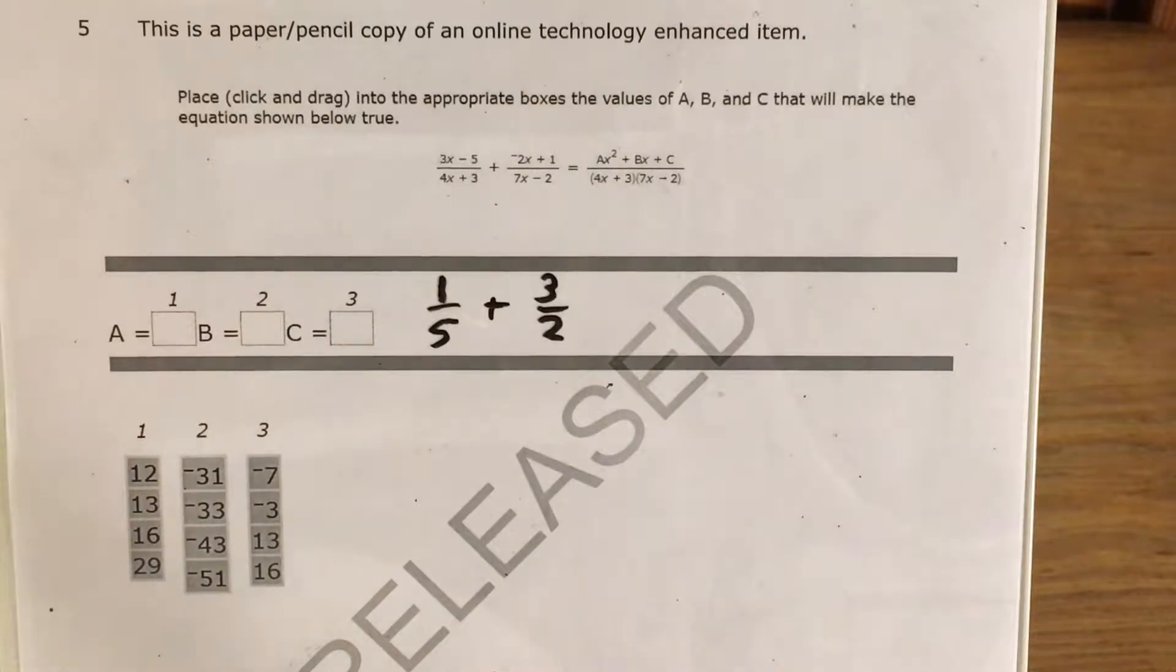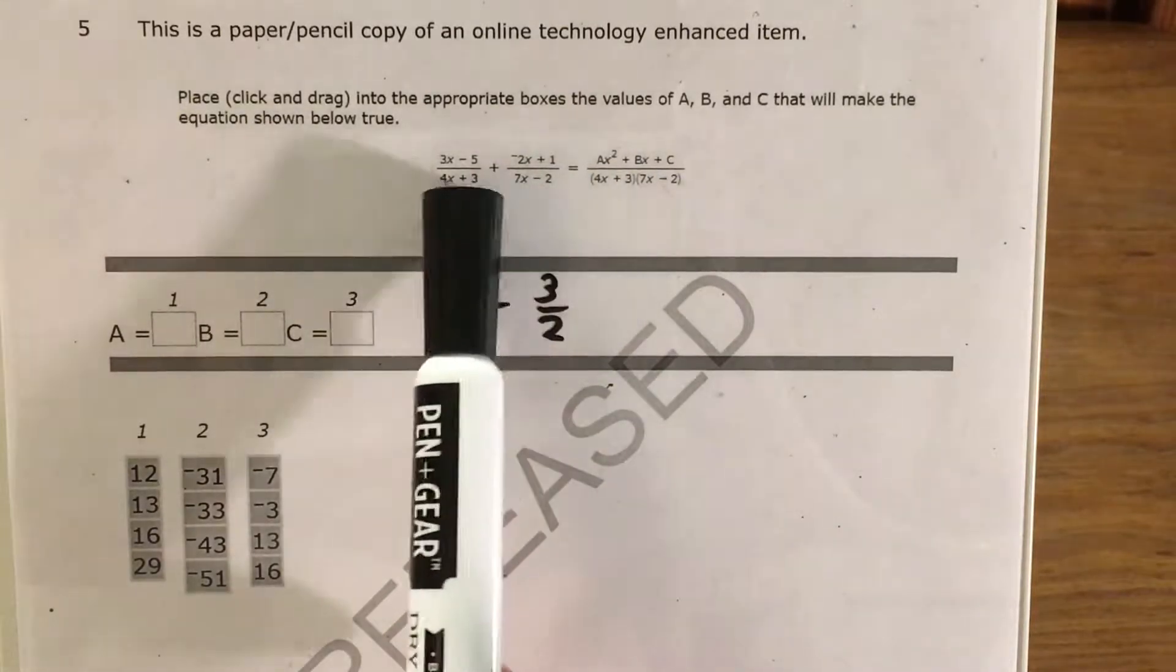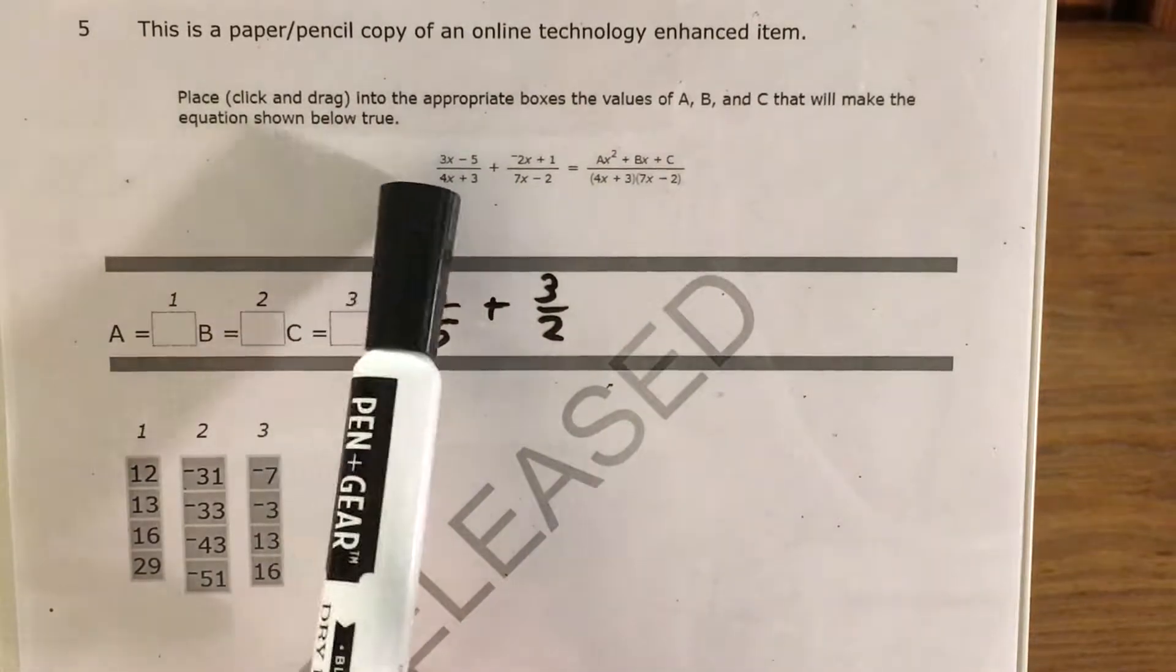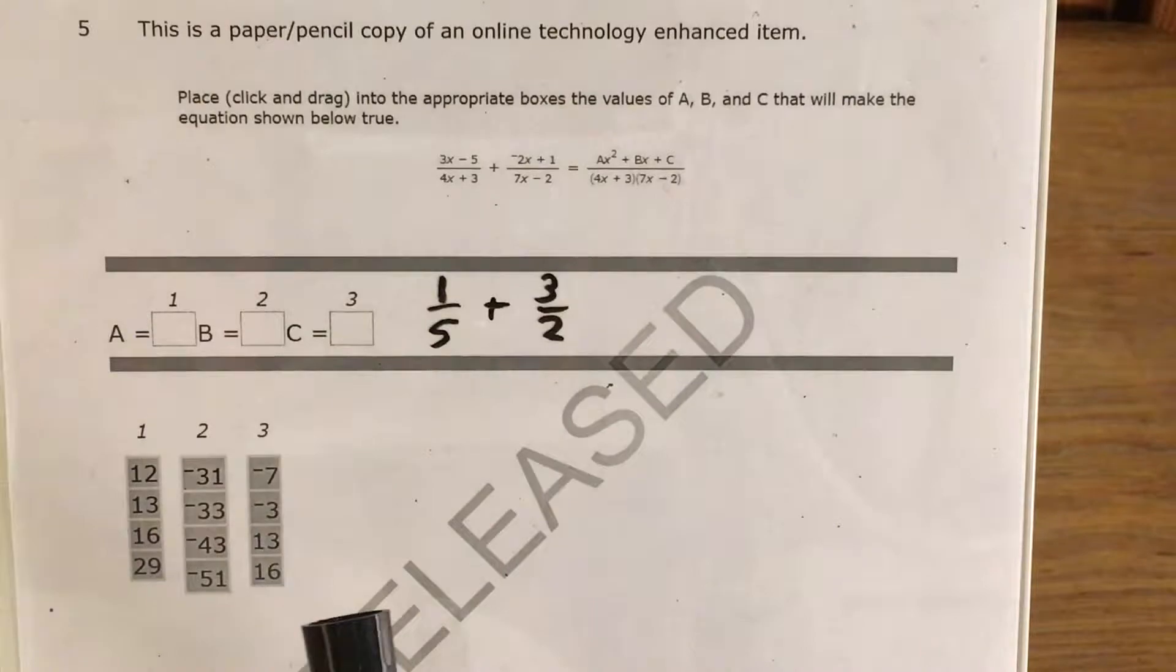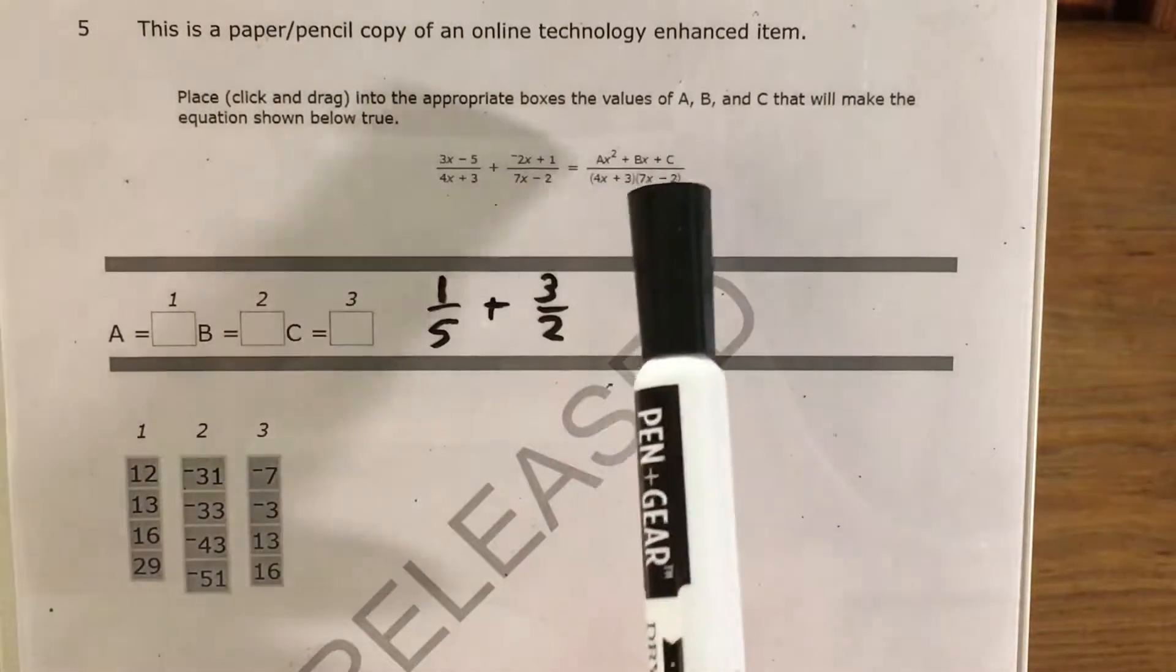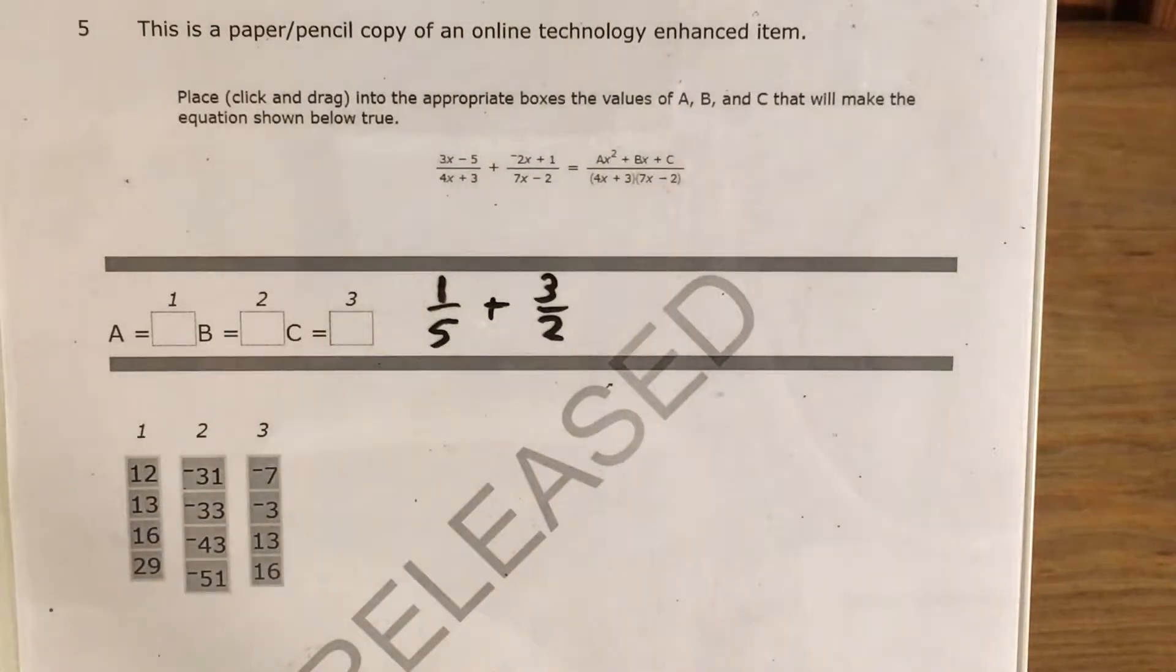What's up, math scholars and math haters? This is Mr. W. Today we're going to tackle question 5 in the Math 3 questions that North Carolina released this past school year. We can see that we have two rational expressions, 3x minus 5 divided by 4x plus 3, and negative 2x plus 1 divided by 7x plus 2, equals something over this. And we're supposed to figure out exactly what polynomial this would be.